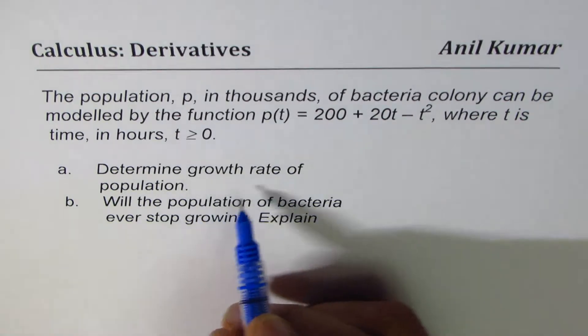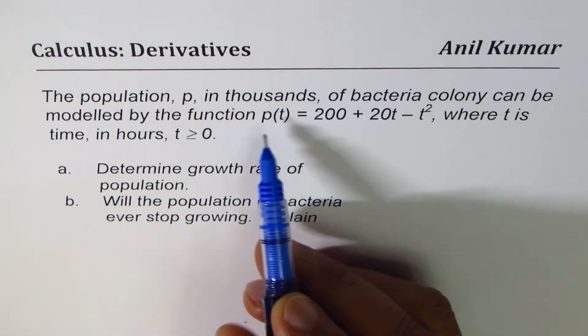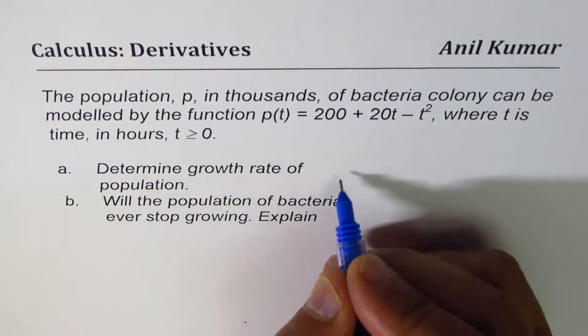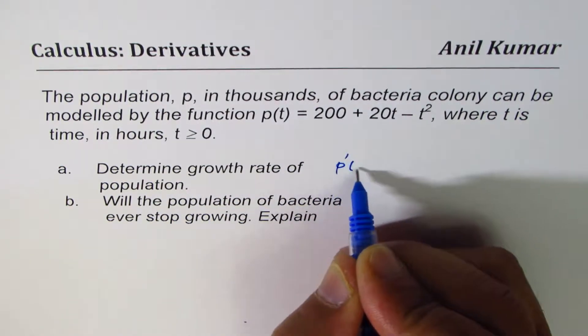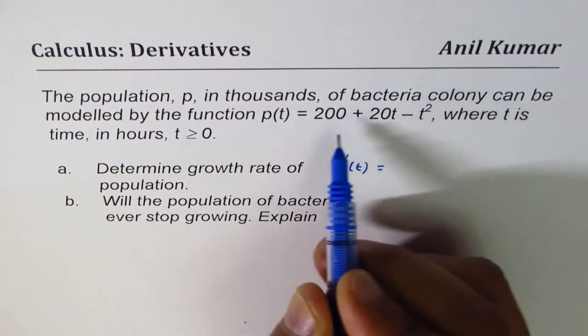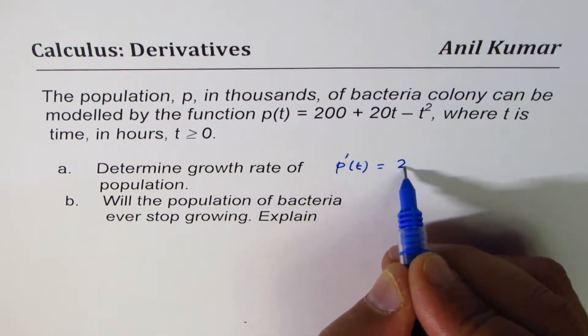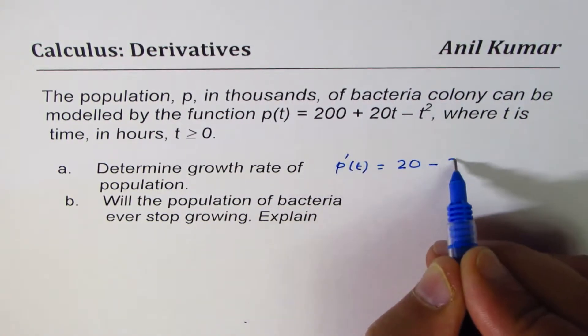Now growth rate is derivative. We are given in thousands the population of bacteria, so the growth rate will be the derivative P'(t). Derivative of 200 is 0, 20t will be 20, minus 2 times t.